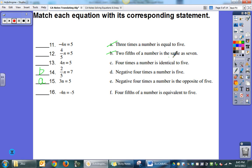4 times a number is identical to 5. Make sure that you are choosing the one that's positive, not this one up here that's negative. So that's c. Negative 4 times a number is 5. There's my negative. Negative 4 times a number is the opposite of 5. So there's my opposite of 5 right there. And then 4 fifths of a number is equivalent to 5 right there.